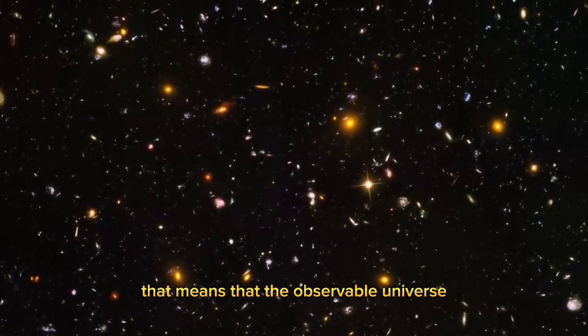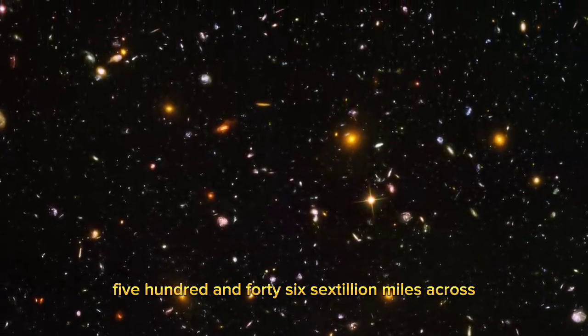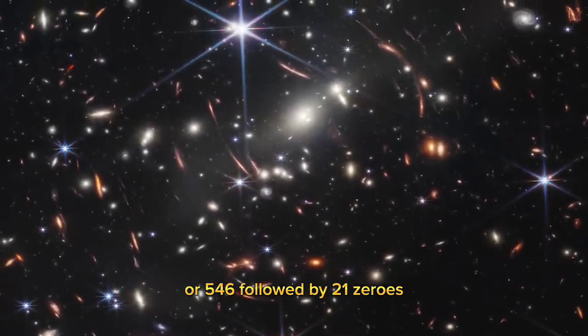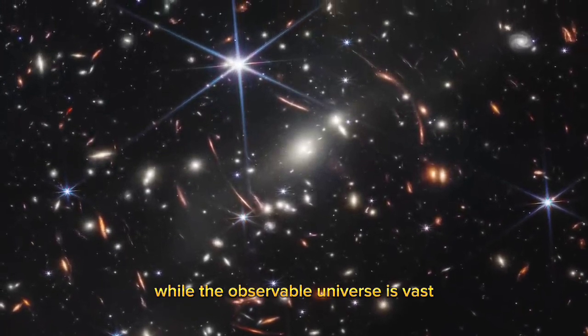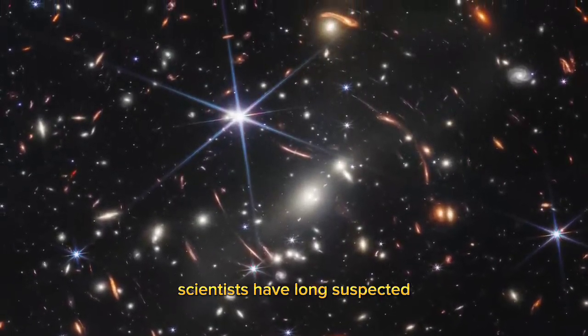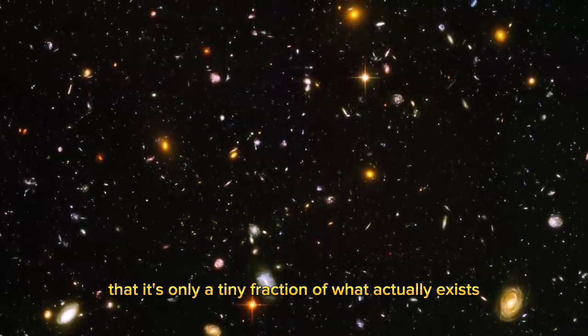That means that the observable universe is approximately 546 sextillion miles across, or 546 followed by 21 zeros. While the observable universe is vast, scientists have long suspected that it's only a tiny fraction of what actually exists.